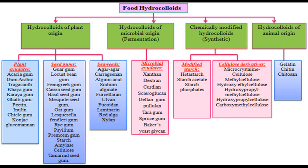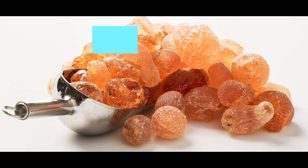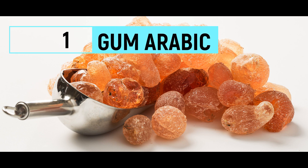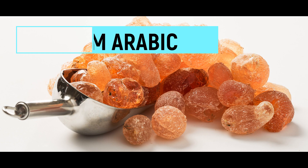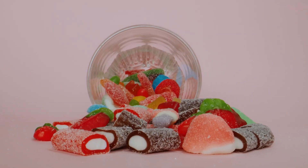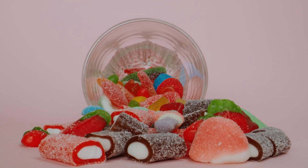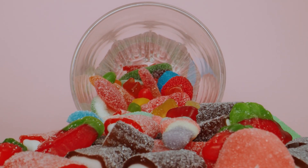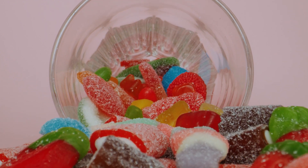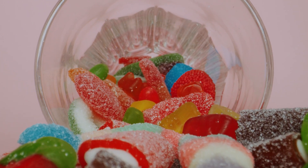Some common types of food hydrocolloids include gum arabic, xanthan gum, carrageenan, guar gum, and agar. Gum arabic is derived from the sap of the acacia tree and is used as a thickener and stabilizer in candies, ice creams, and soft drinks.